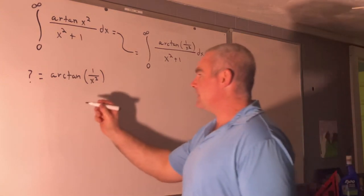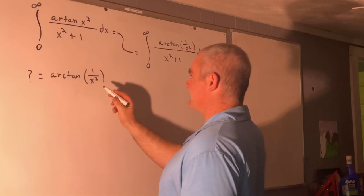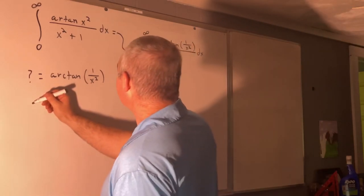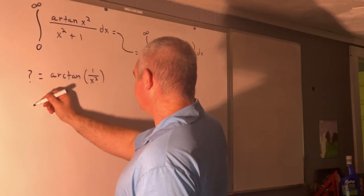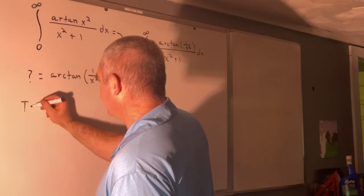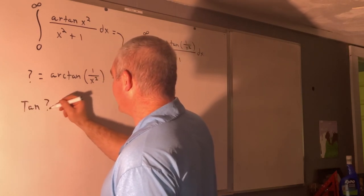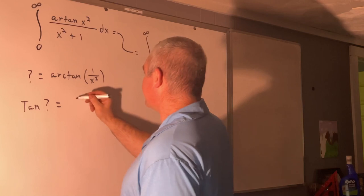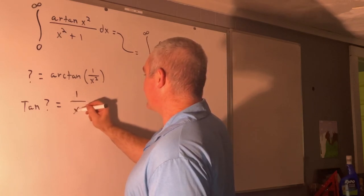So that means if we take tangent on both sides, we get that tangent question mark is equal to 1 over x squared.